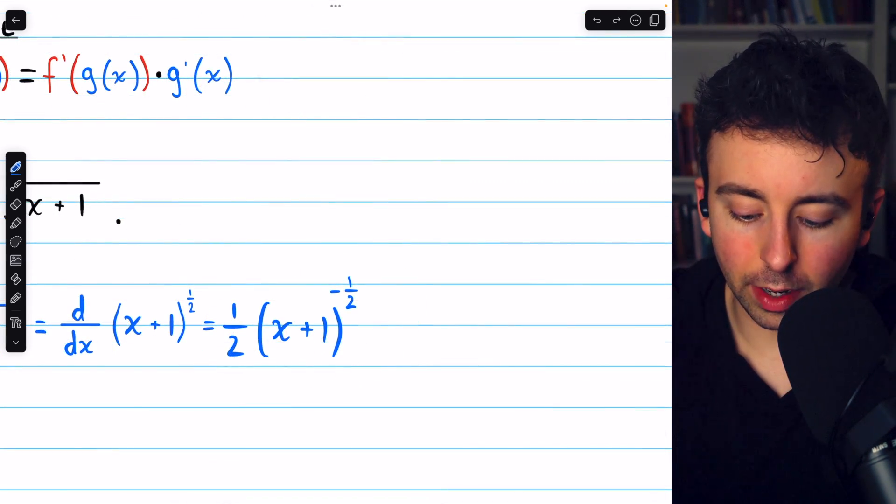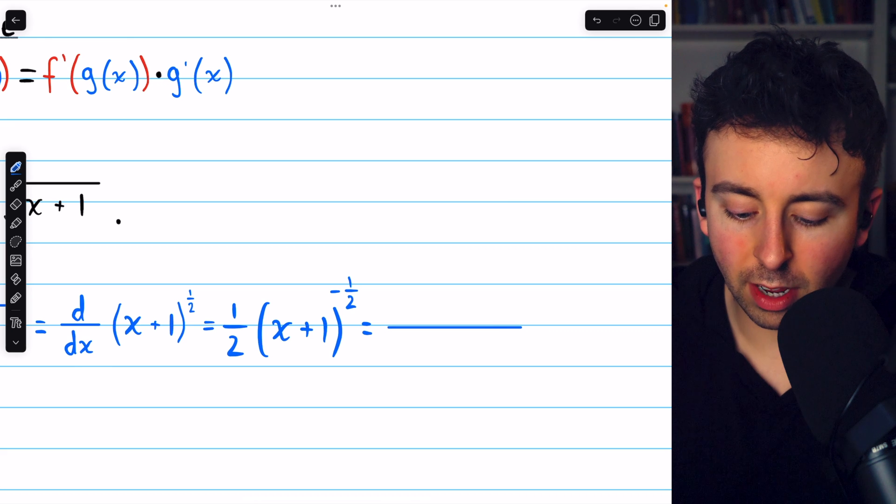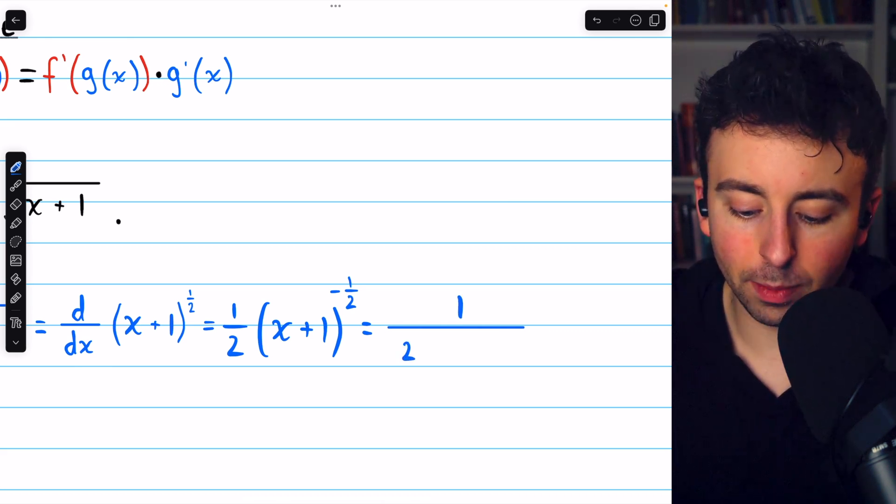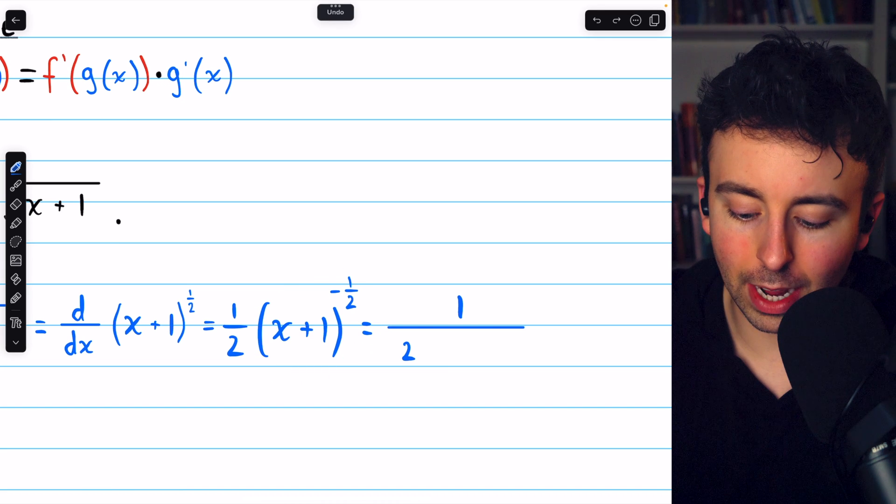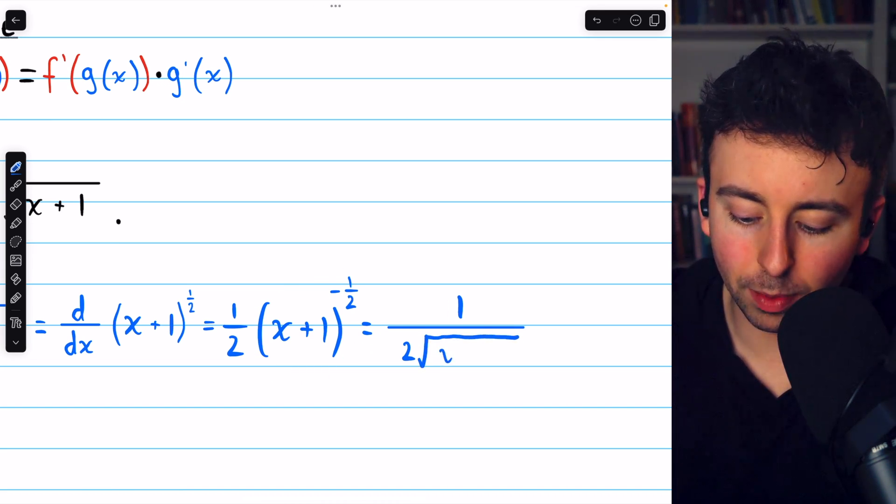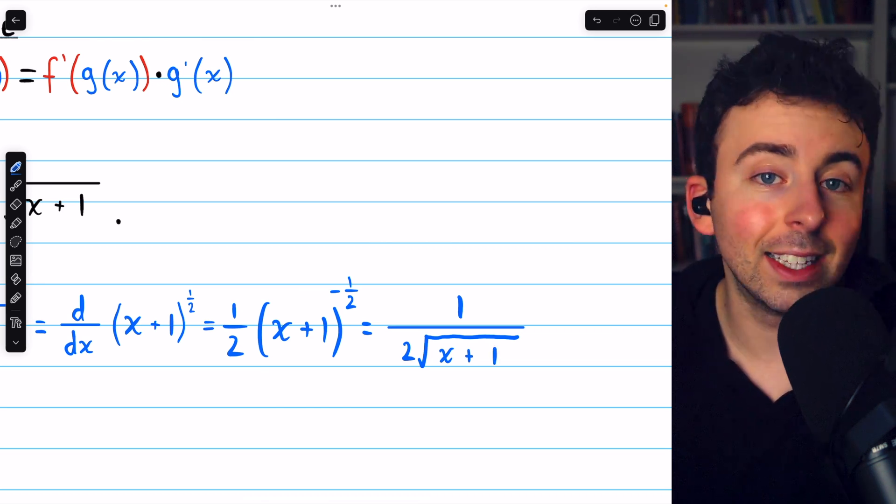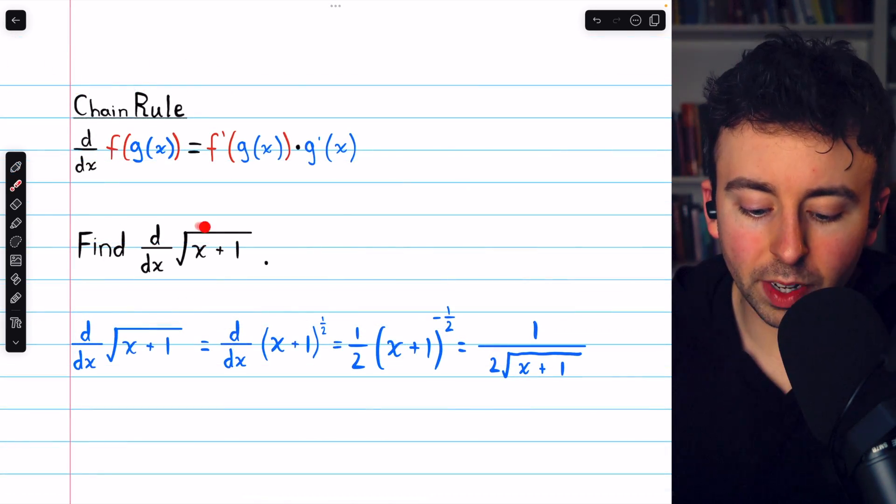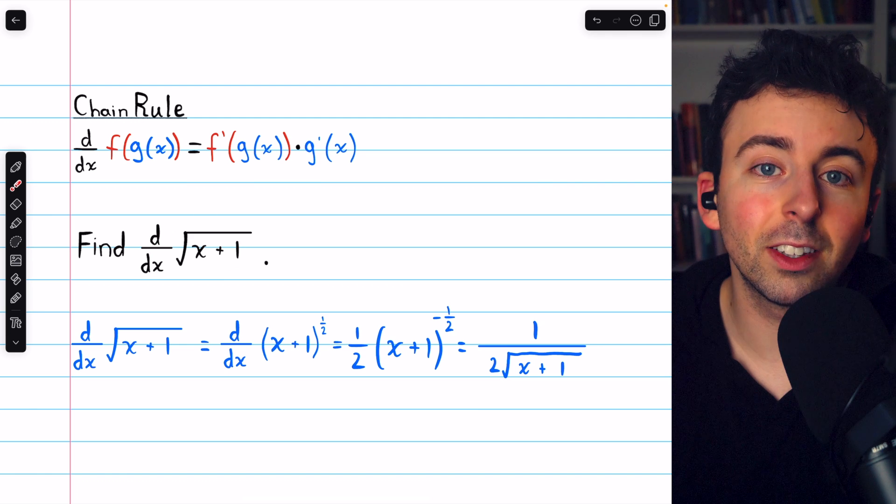And so that's the derivative. If you prefer to avoid negative powers, we could write this as 1 divided by 2 times. We can move this into the denominator to get rid of the negative power. And then the 1 half is the same as the square root. So it's the square root of x plus 1 in the denominator. And that's how to find the derivative of the square root of x plus 1 using the chain rule.